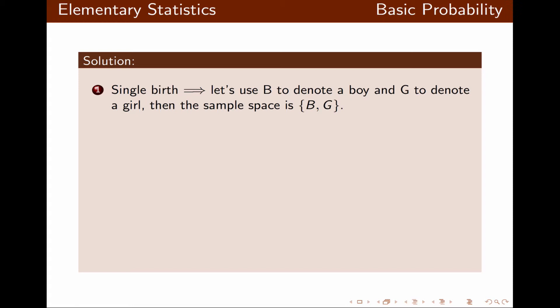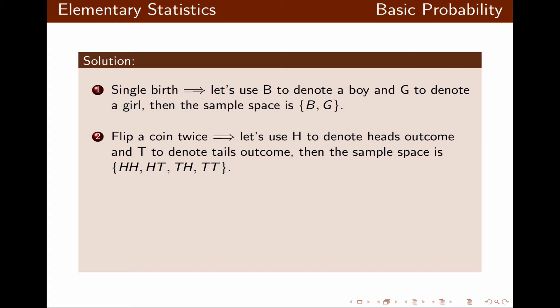The single birth could be either a boy or a girl. Now if we flip a coin twice, using H for heads and T for tails, since we're flipping a coin twice the sample space will be HH, HT, TH, and TT. TT means two tails, HH means two heads, and so on.